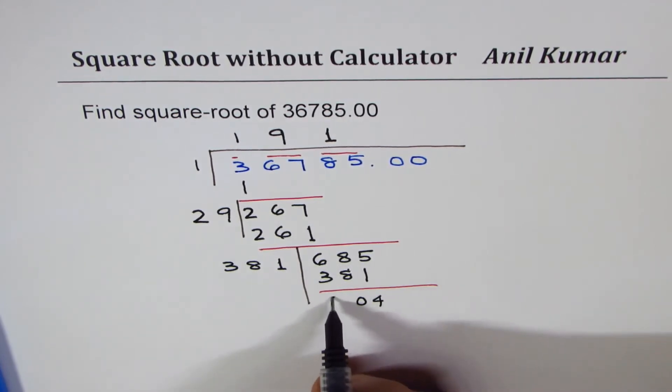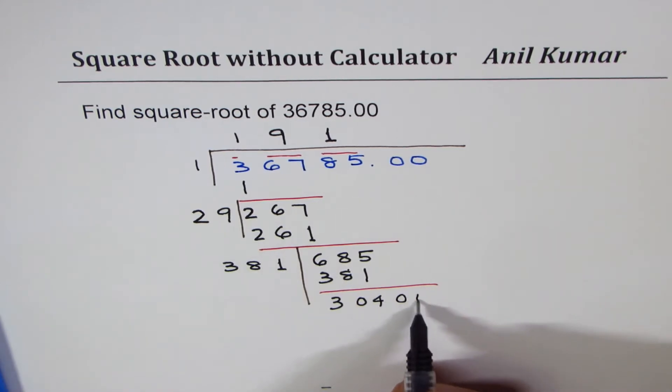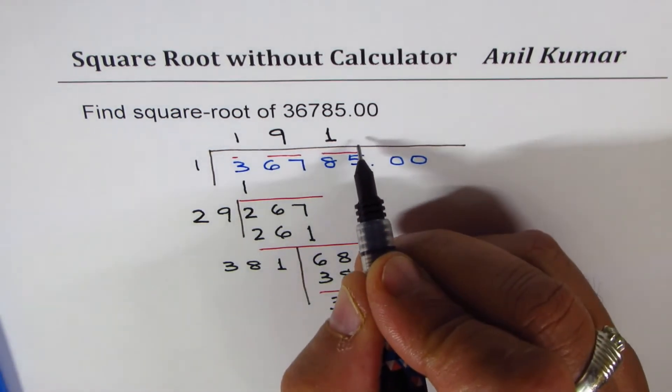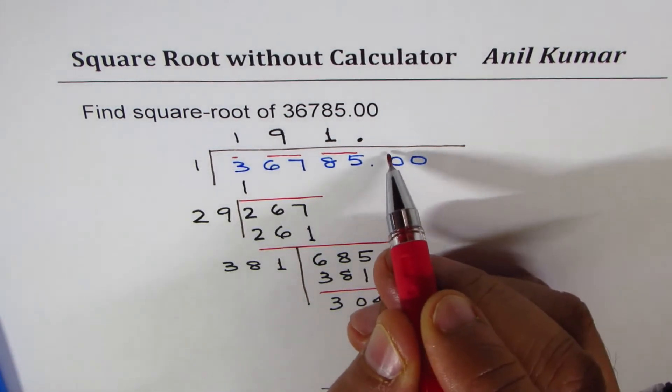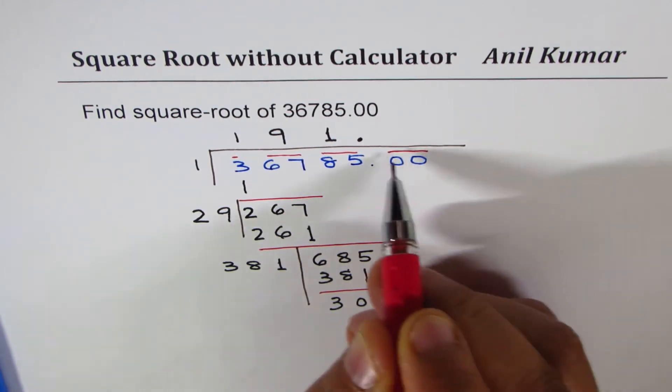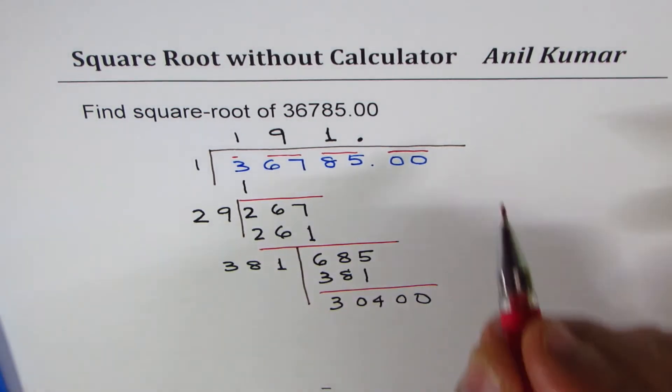And now we'll bring down the next two numbers which are zeros. So let me put a decimal since we have brought a number after the decimal. Numbers after decimal will be grouped in twos, going away from the decimal. So the idea here is grouping of twos away from decimal, both sides, group in twos.